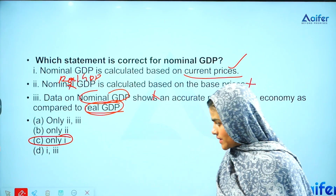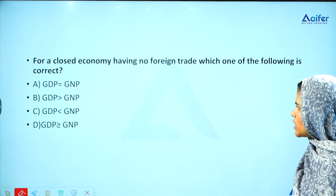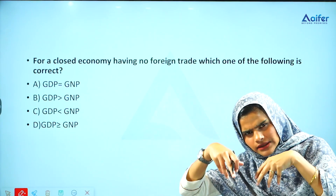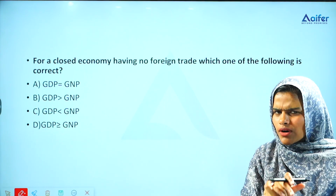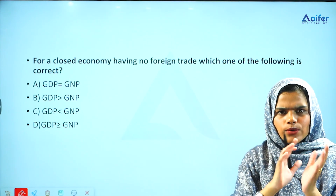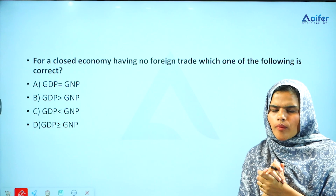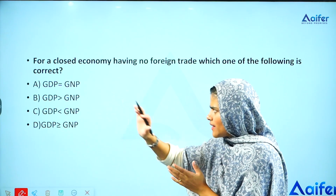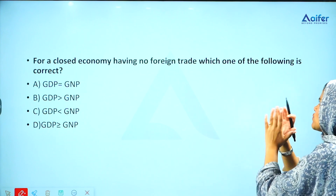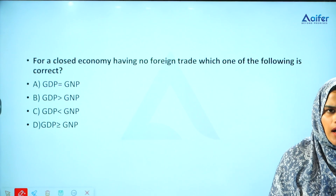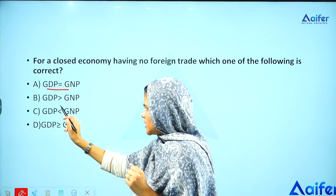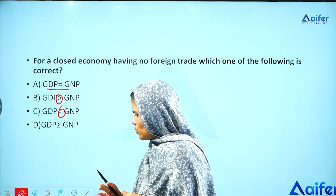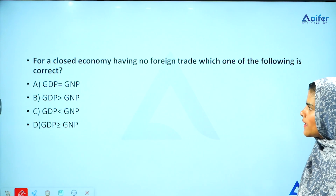Moving to the next question. For a closed economy having no foreign trade, which one of the following is correct? The options are: GDP is equal to GNP, GDP greater than GNP, GDP less than GNP, or GDP greater than or equal to GNP.